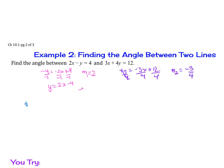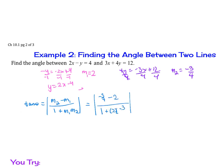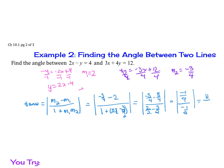Now apply the formula: tangent of theta equals the absolute value of (m2 minus m1) over (1 plus m1 times m2). Substituting: absolute value of (negative 3/4 minus 2) over (1 plus 2 times negative 3/4). Getting a common denominator, the numerator becomes negative 11 over 4, and the denominator is negative 1 over 2. Simplifying gives 11 over 2.